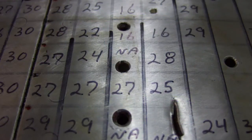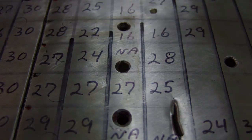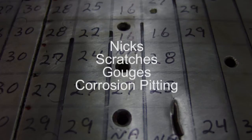As I've already indicated, there are several forms of damage that could require UT mapping. This would include minor nicks, scratches, gouges, and corrosion pitting.